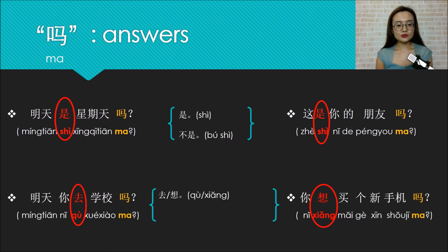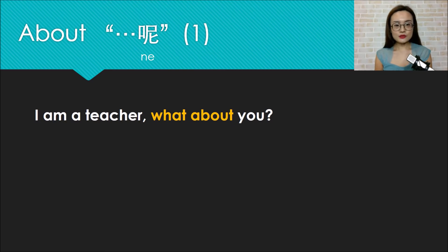And the negative answers can be bu qu (I won't go), bu xiang (I don't want to). Now let's talk about the second general question: ne question. There are two types of ne question. Let's look at the first one.